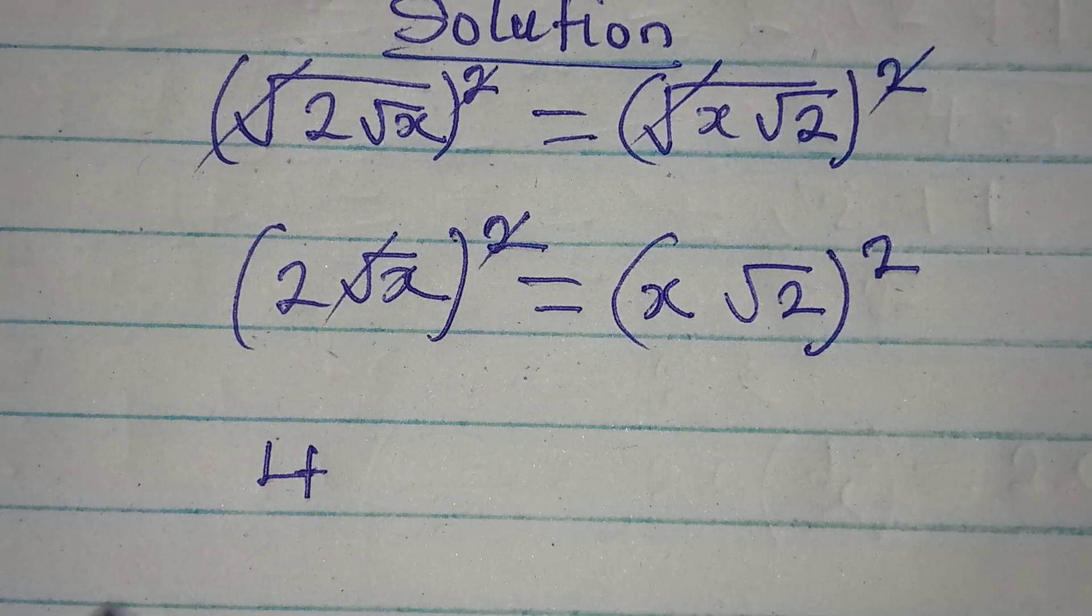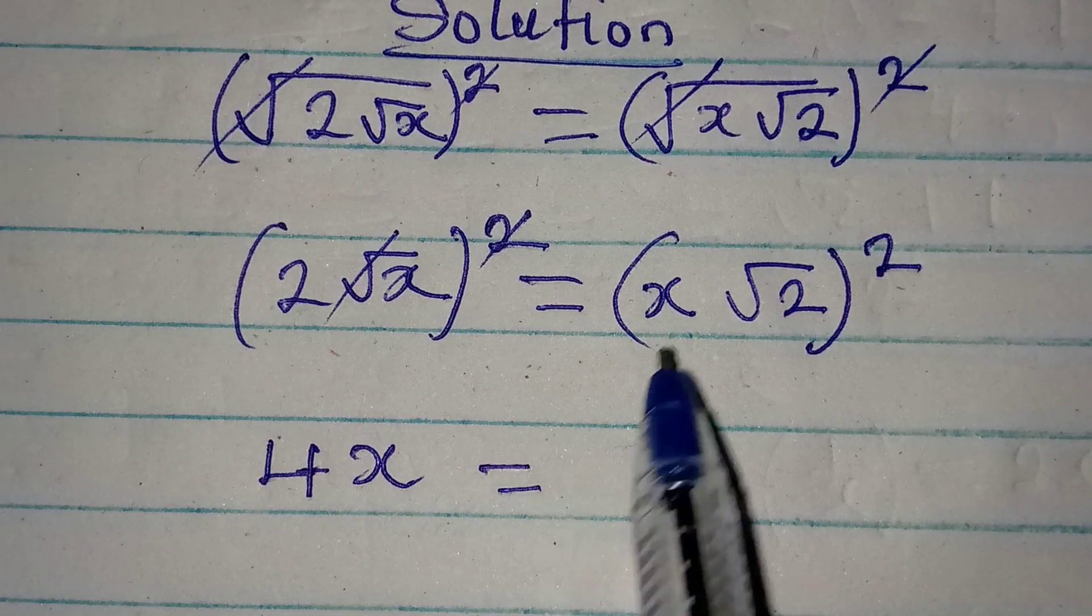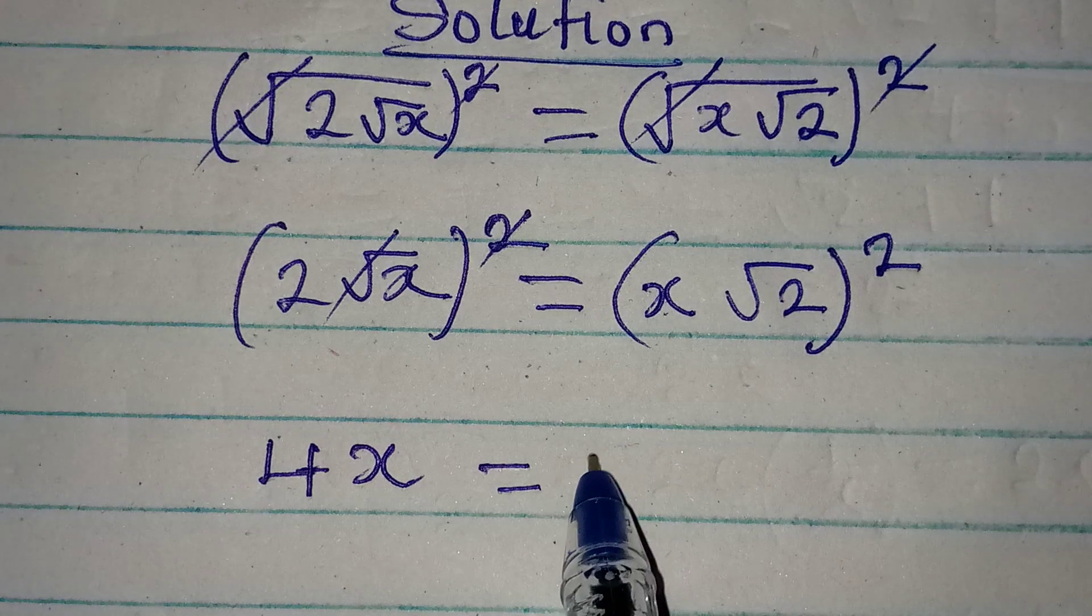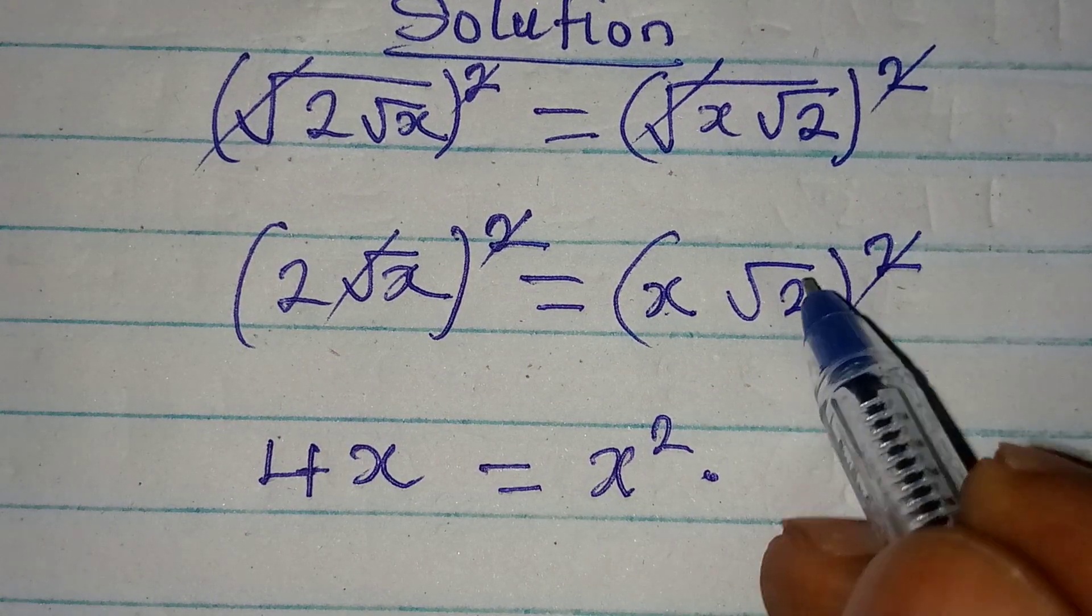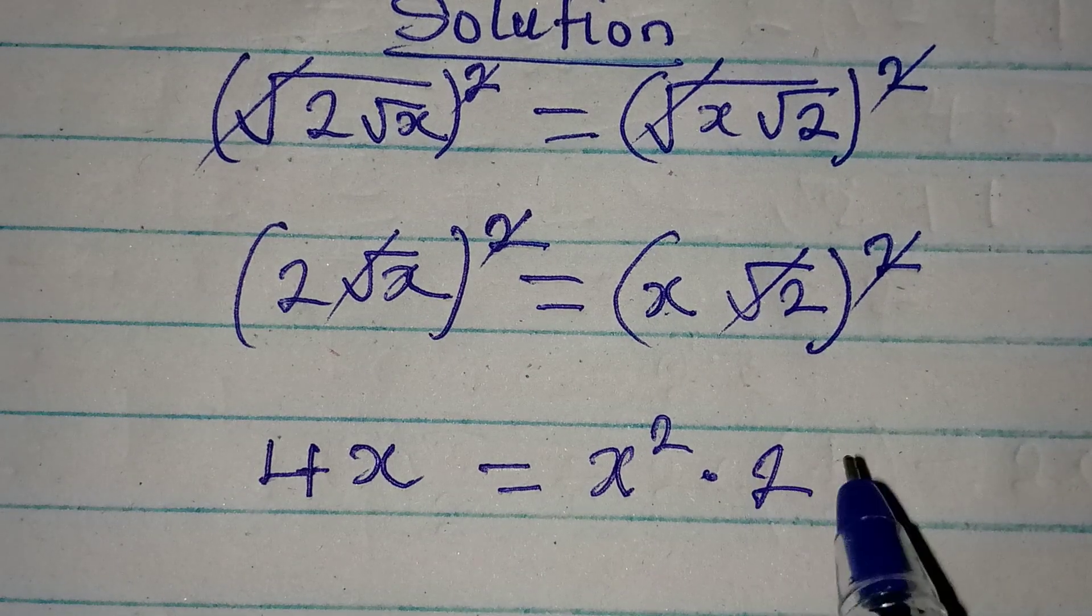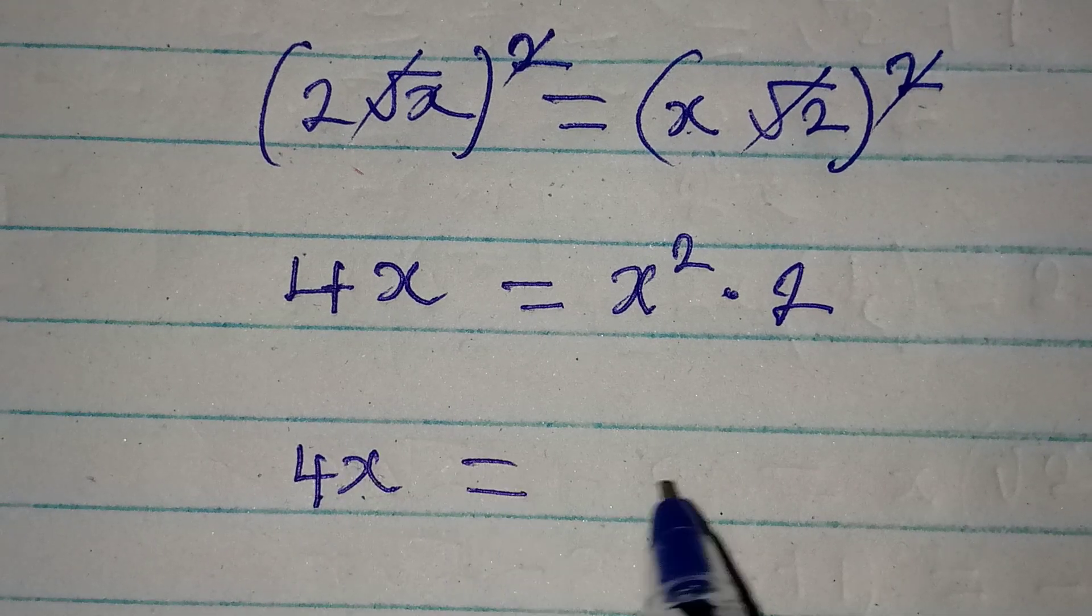Then square root and this square will finally cancel, so we have x over there. This is equal to here we have x squared, then multiply by... this can now cancel so we have 2, and this means that 4x is equal to 2x squared.